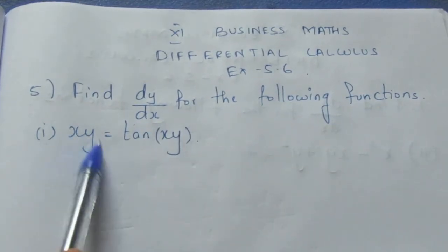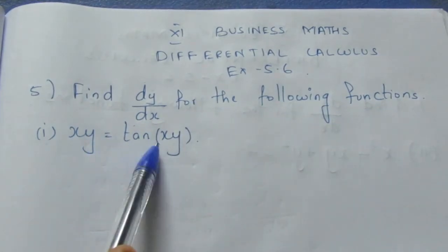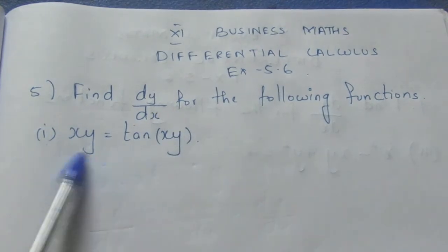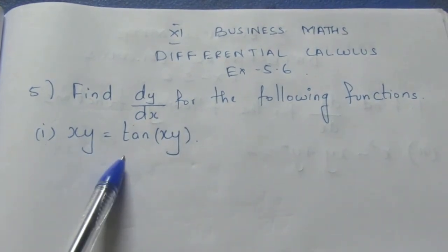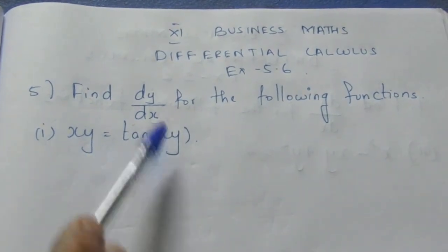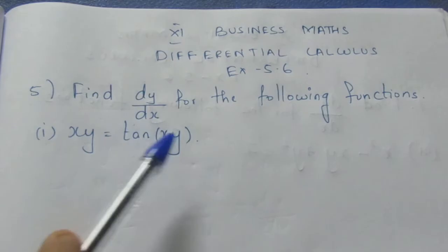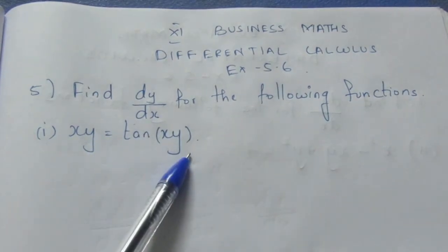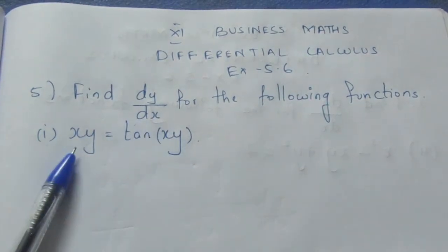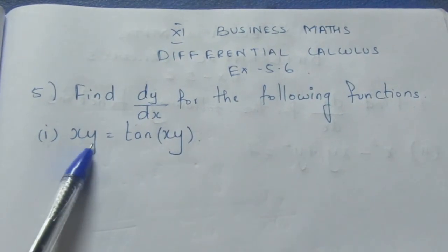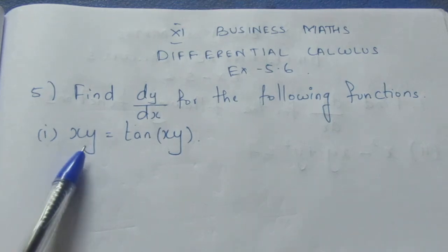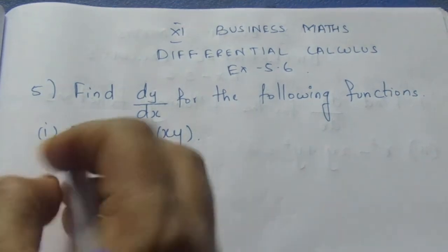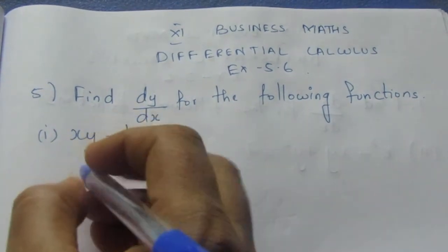The first one is: xy equals tan(xy). To find dy by dx, we differentiate both sides. On the left side, xy is a product, so we apply the product rule.